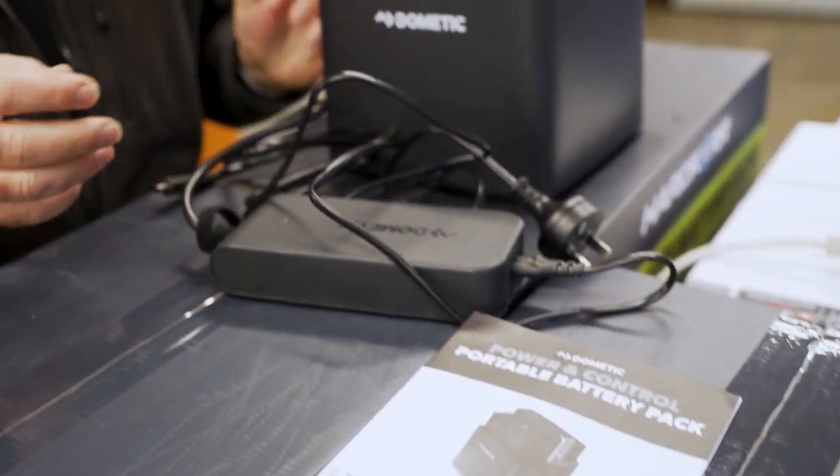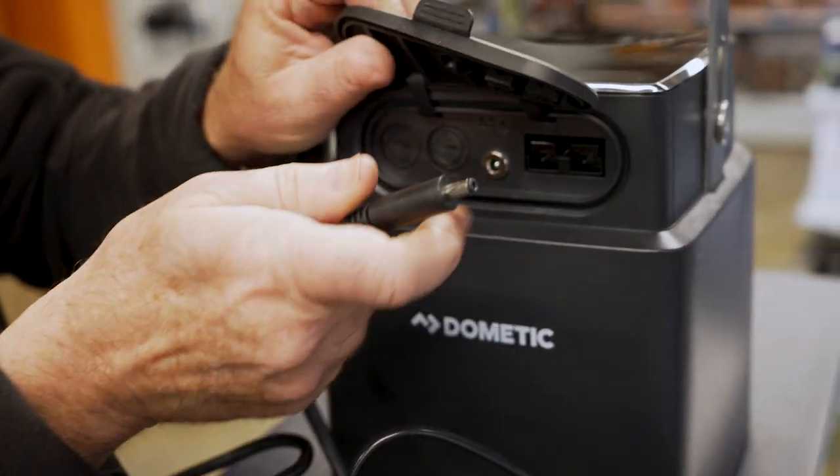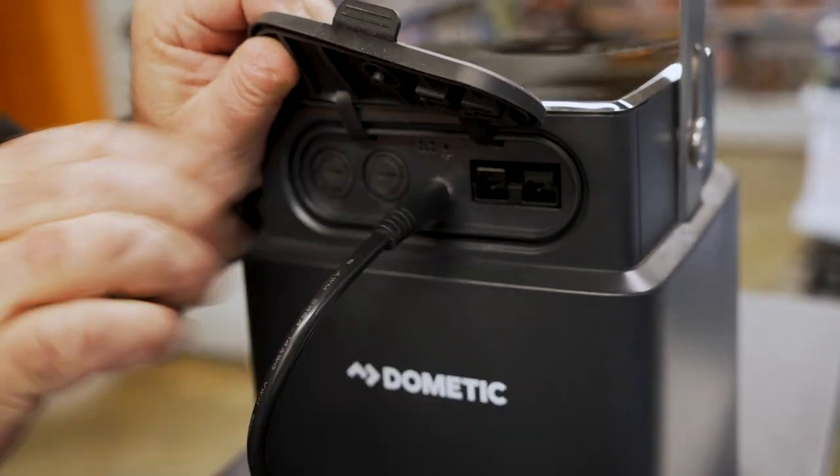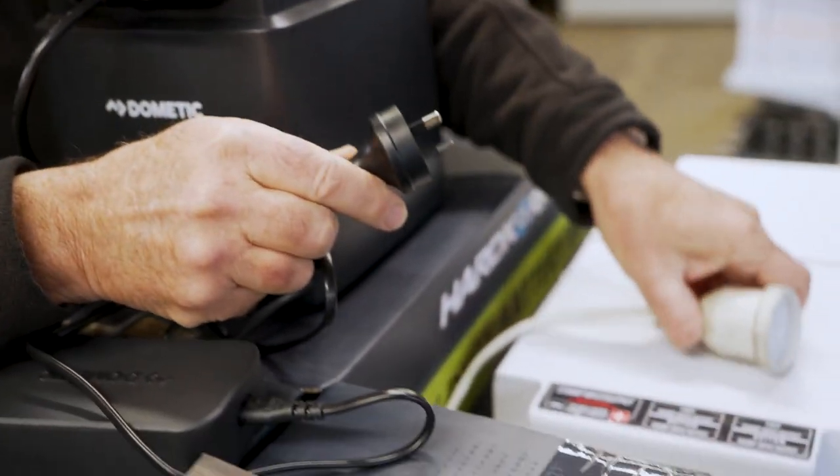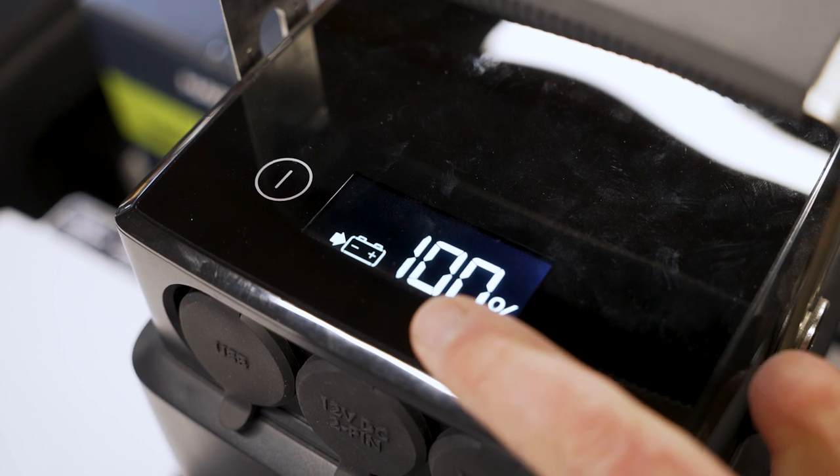If you're going to charge this off mains power, it's very simple. You've got your socket and plug there. That goes straight into the socket, and that will then plug into your mains power over here like that. That will then start charging the unit.